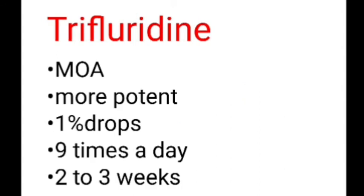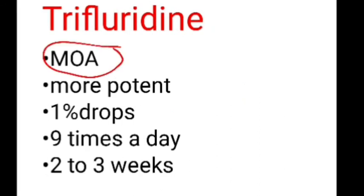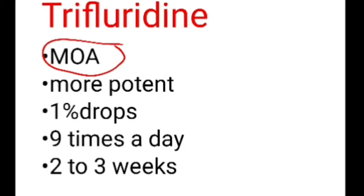The third antiviral is trifluridine. Its mechanism of action is similar to idoxuridine — it inhibits DNA polymerase, incorporates into the viral RNA, and inhibits protein synthesis. Trifluridine is more potent compared to the previous two. It is used as 1% drops, nine times a day for two to three weeks.